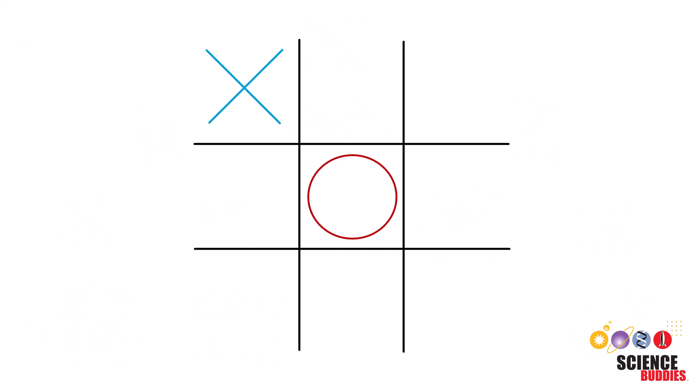Before we start on the algorithm, let's revisit the basics of tic-tac-toe. Tic-tac-toe consists of a 3x3 grid, and the goal of the game is to get three in a row.